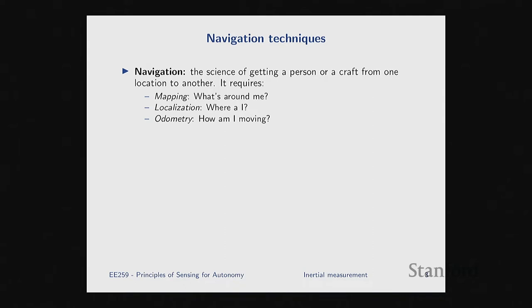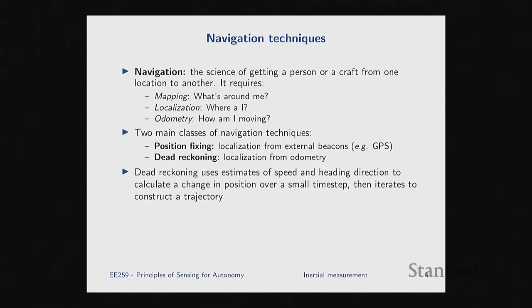When it comes to localization, there are two main types of techniques. The first is called position fixing, which is exactly what GPS does — you receive signals from external transmitters and using those signals, by some processing, you fix your position.